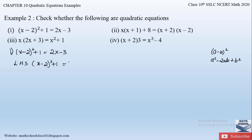So a² = x², minus 2 × a × b = 2 × x × 2 = 4x, plus b² = 2² = 4, plus 1 from outside. Simplifying: x² − 4x + 4 + 1 = x² − 4x + 5. This is the simplified left-hand side.